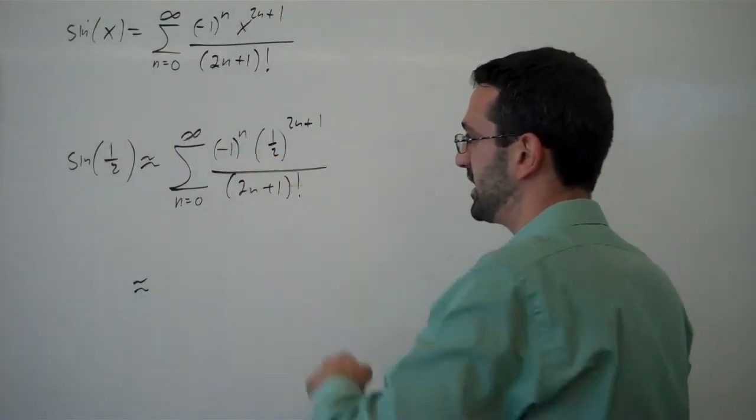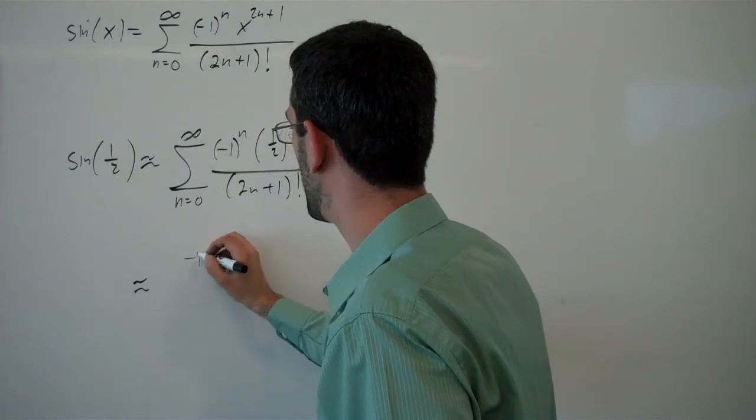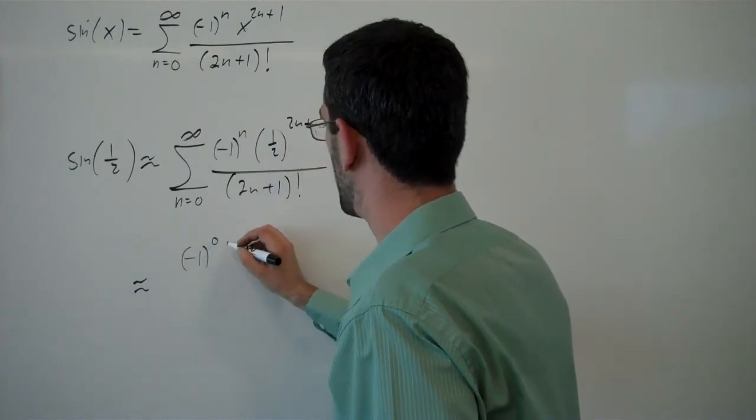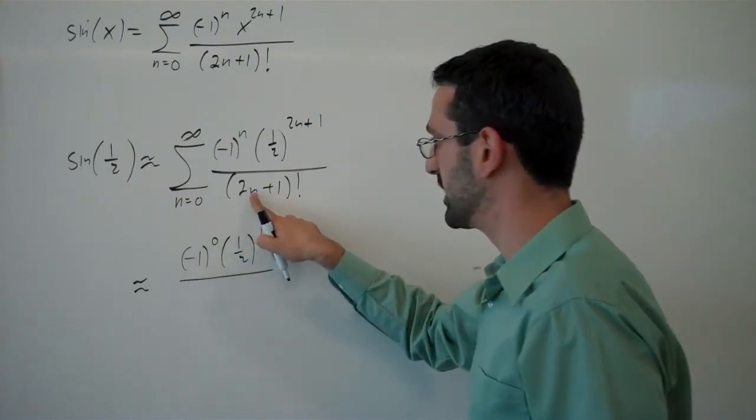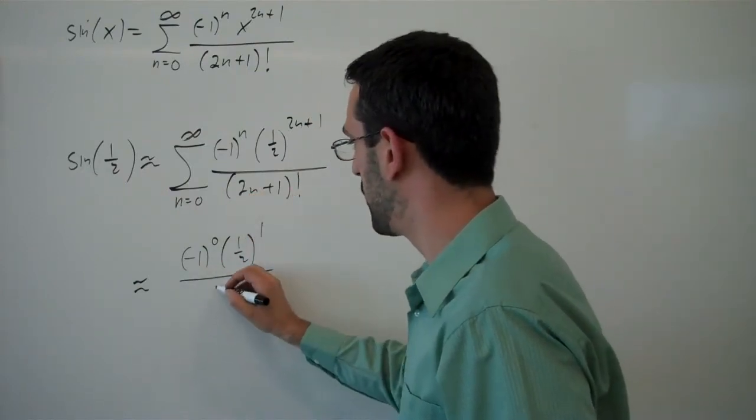So putting in n equals 0, we have negative 1 to the 0 times one half to the 1 over, plugging in 0 here, you get 1 factorial.